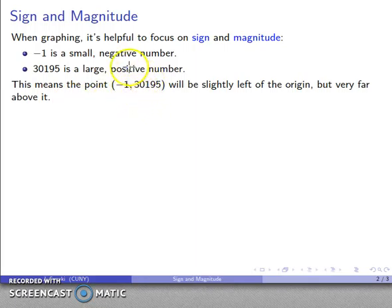So one way I could graph it is I could read this literally. I start at the origin, I go back one unit, there's my x coordinate, I go up 30,195 units. So I'm going to go up 1, 2, 3, 4, 5, 6, 7, 8, 9, 10, 11, 12, 13, 14, and after a couple of weeks, I'll get to the correct point.